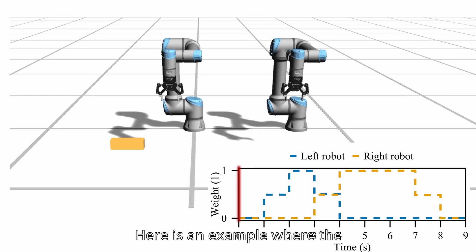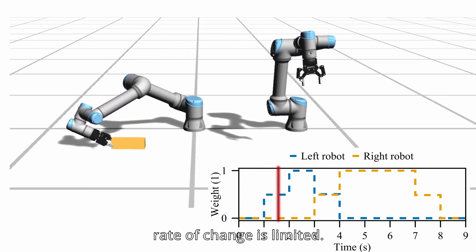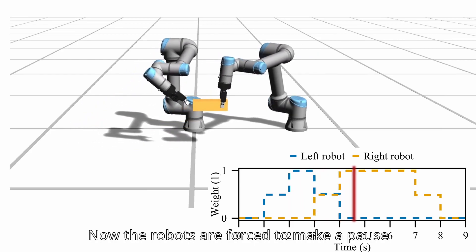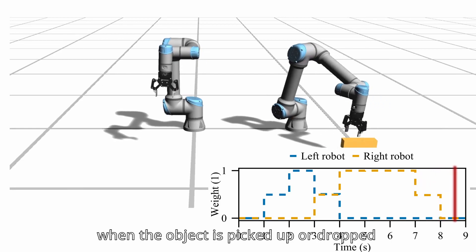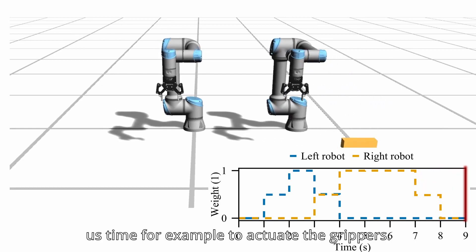Here is an example where the rate of change is limited. Now the robots are forced to make a pause when the object is picked up or dropped off on the ground, which gives us time for example to actuate the grippers.